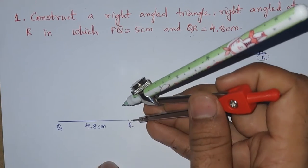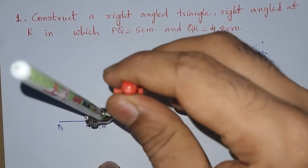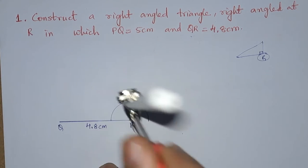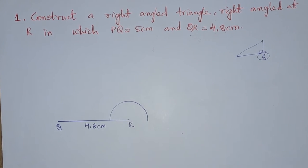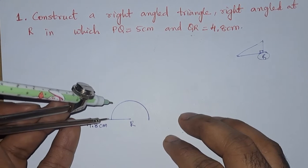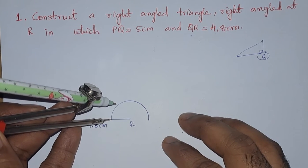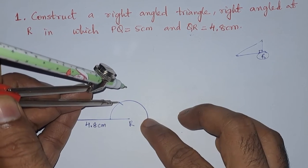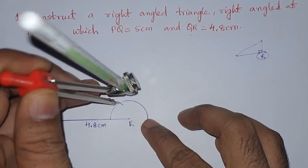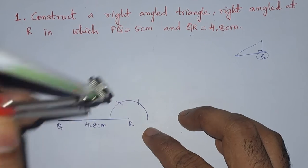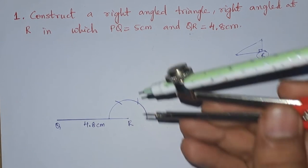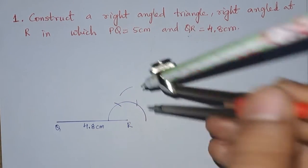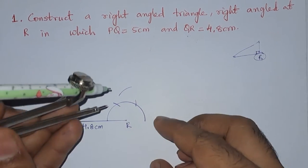Next, to get the right angle at R, with some radius we draw a semicircle. Then with this point we draw an arc — we get 60 degrees. Again 60 degrees, that makes 120 degrees. Now we need to draw the bisector of this angle.